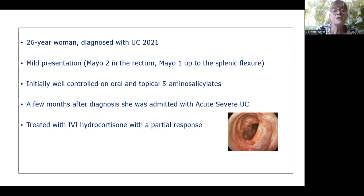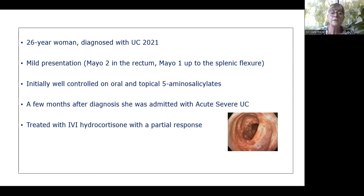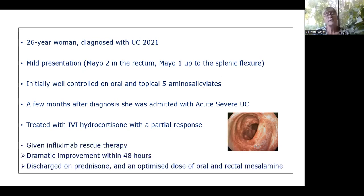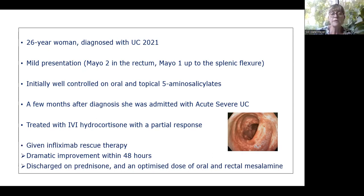The lymph node biopsy showed necrotizing suppurative inflammation, positive for acid-fast bacilli, and anti-TB therapy was initiated. The plan was to start vedolizumab after a few months of anti-tuberculous therapy. The lesson from these two cases: treatment of latent TB infection is not foolproof — both patients were on isoniazid and pyridoxine when they developed TB. Even with six months of isoniazid therapy, the five-year risk of TB is only reduced by 65%; nine months confers 90% protection, meaning 10% can still get TB.